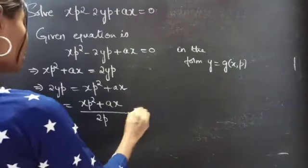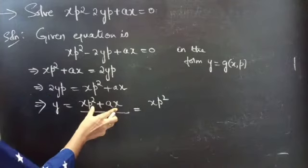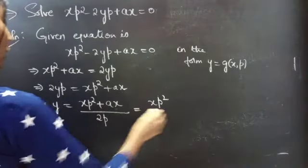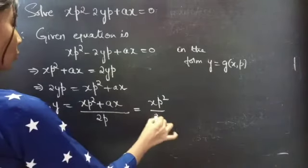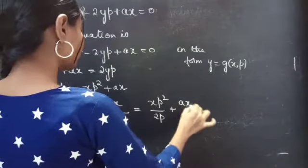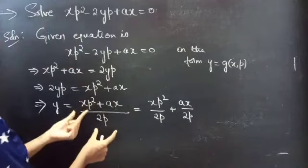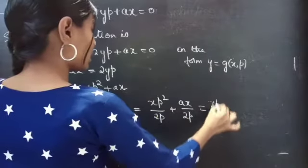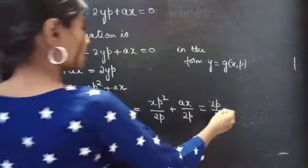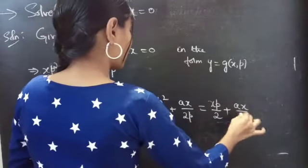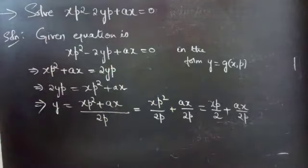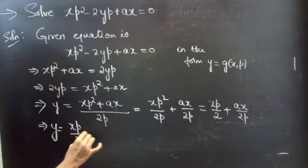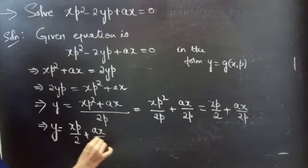We can split the expression since we have two terms in the numerator and one in the denominator, giving xp² by 2p plus ax by 2p. This simplifies to xp by 2, since one p cancels, plus ax by 2p. So now we have y equals to xp by 2 plus ax by 2p, which is in the form y equals a function of x and p.